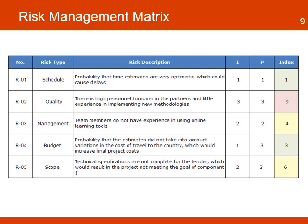For example, a high-level impact and high-level probability will give a risk index of 9. A low impact and a low probability will give a risk index of 1. With the risk index, the team can then identify those high-index risks that need immediate action and plan specific responses and strategies to avoid the risk or reduce its impact in the project.